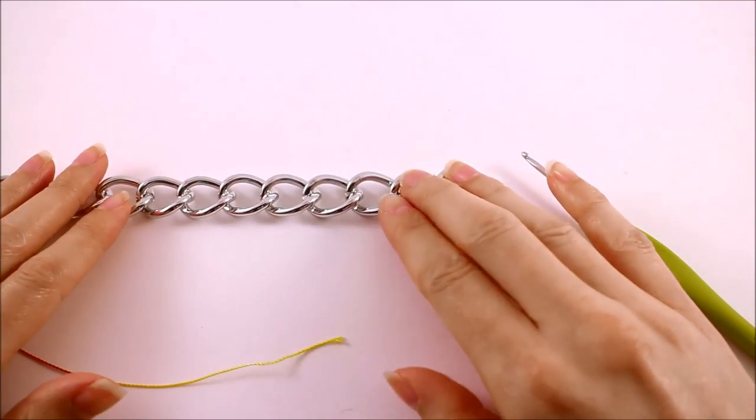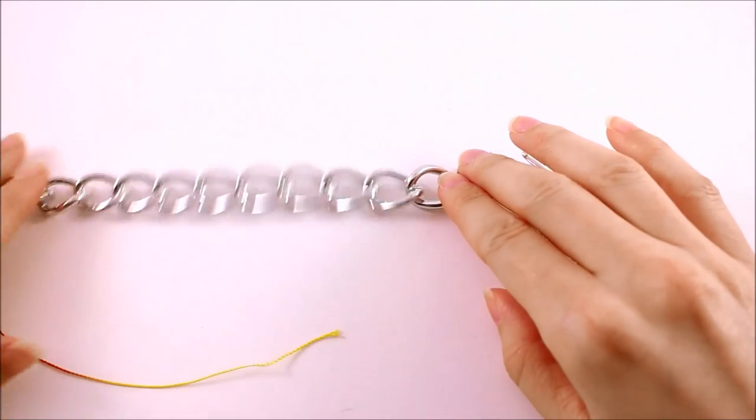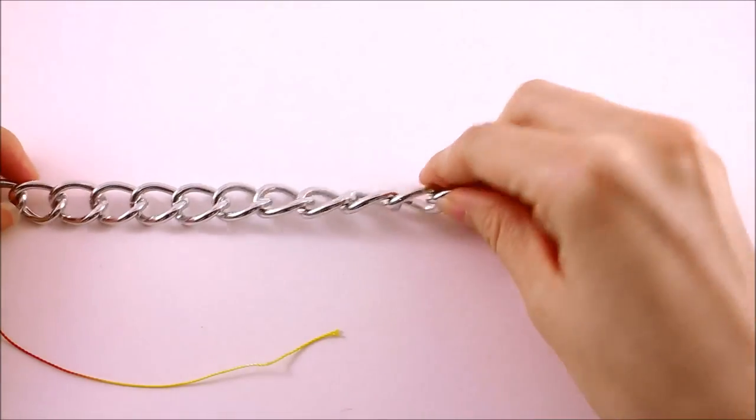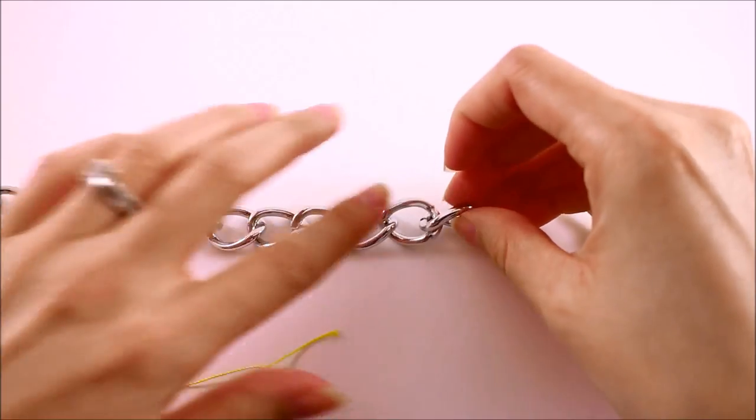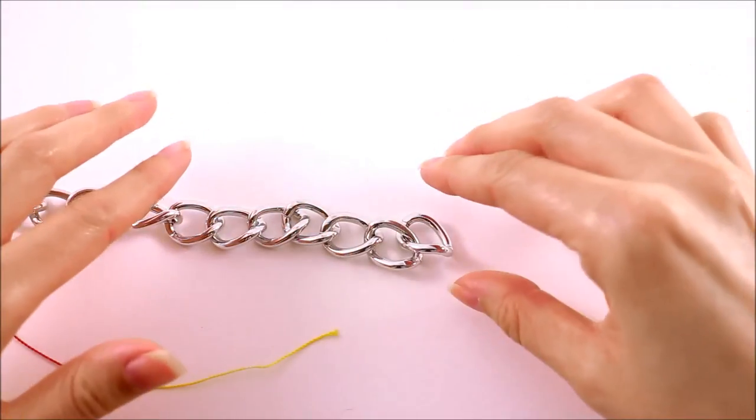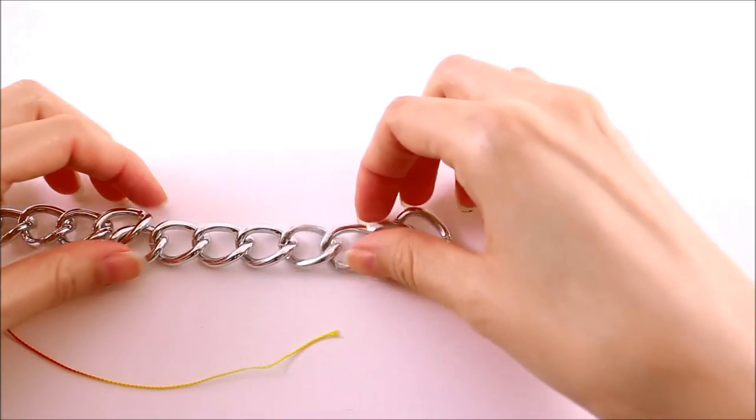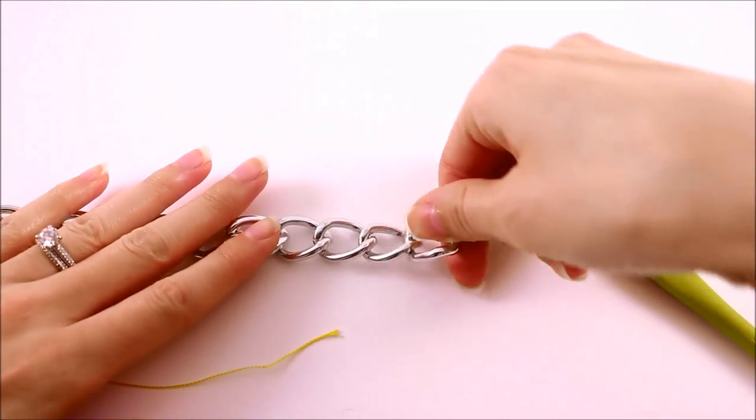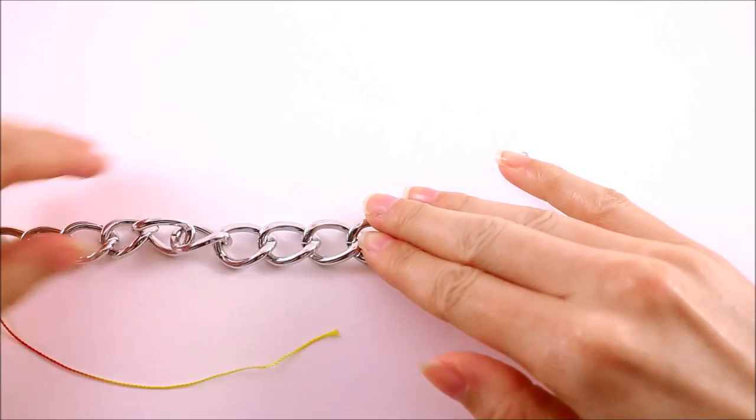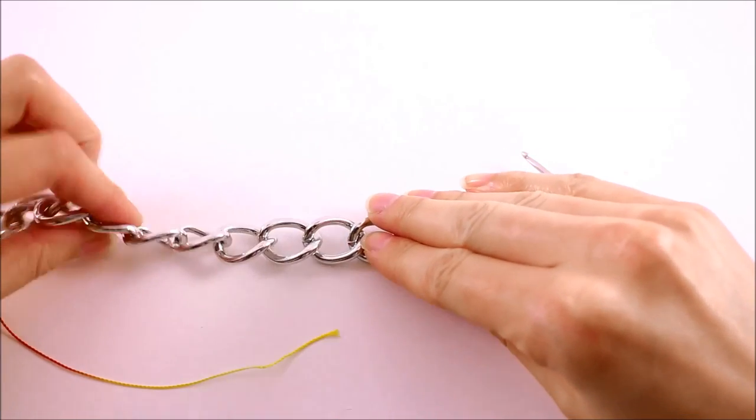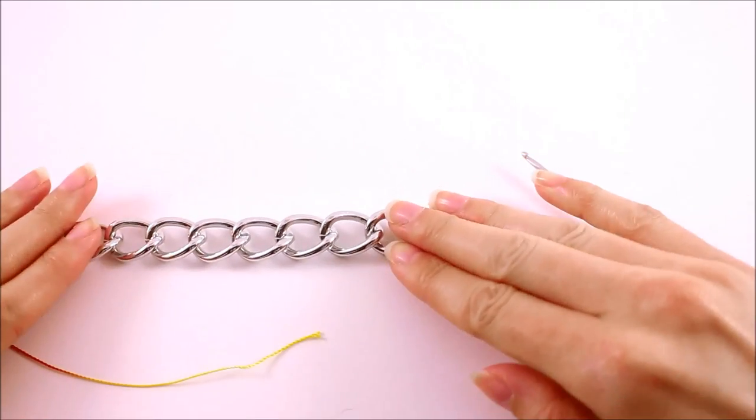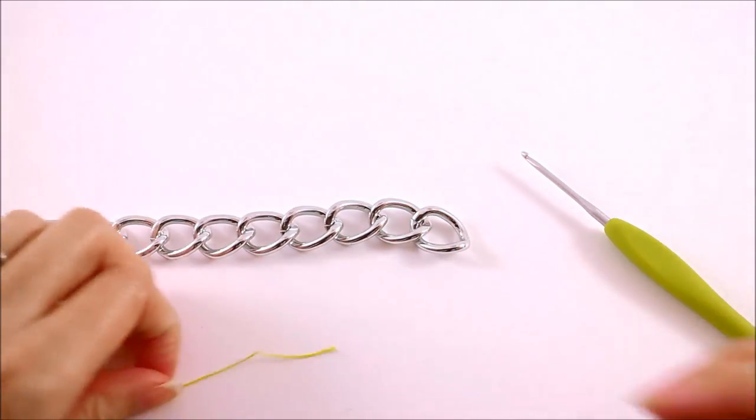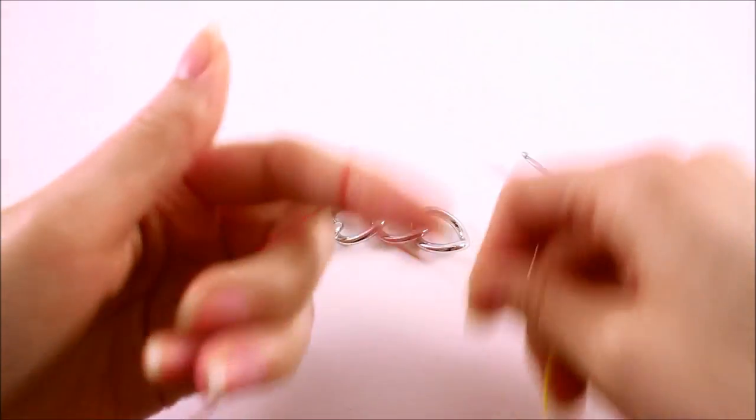To begin, the first thing you want to make sure is that your curb chain is completely flat. You don't want to have it twisted in any way because when we start crocheting this together, that's going to lock it in the position. So you want to make sure they're all flat. You can just straighten them out little by little as you get to it. So just go ahead and grab your thread.